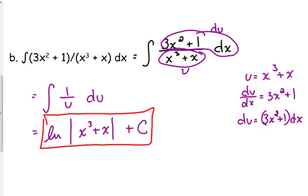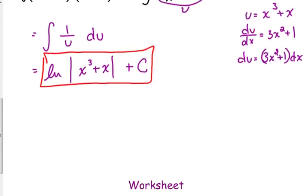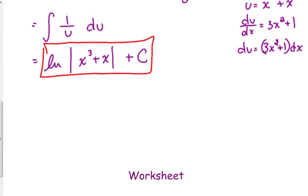And again, you can always take the derivative to check. 1 over x cubed plus x times the derivative of x cubed plus x, which is 3x squared plus 1. And the derivative of a constant is 0. So, we'll practice.